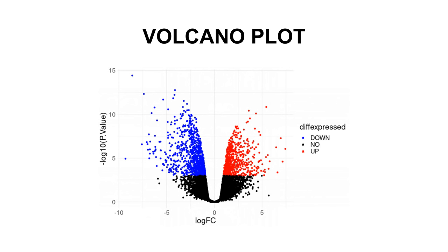That means you'll be able to identify down-regulated, up-regulated, or those genes that are not differentially expressed. This is how volcano plots can be used to visualize the data, and you can represent each of these groups using a color code. With volcano plots, the left side has the down-regulated genes and on the right side we have the up-regulated genes. The middle has those genes that are not differentially expressed. You can also add labels to genes of interest, and by the end of the tutorial, you would have generated these cool plots.